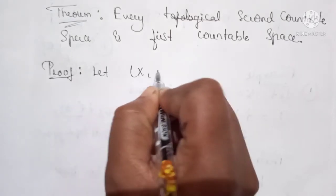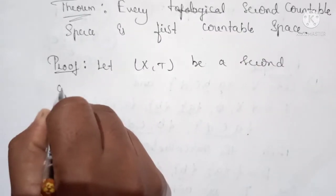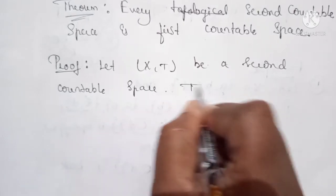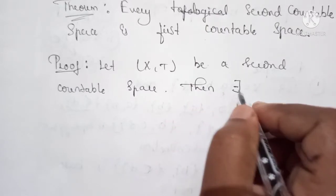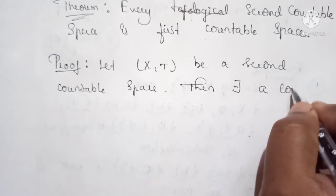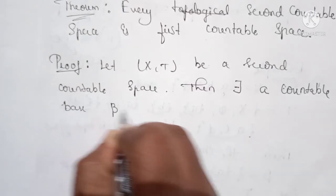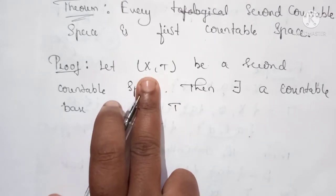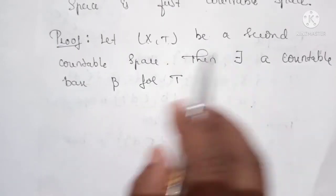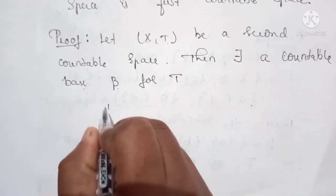Proof: Let (X, T) be a second countable space. By the definition of second countable space, since (X, T) is a second countable space, there exists a base beta for T which is countable.